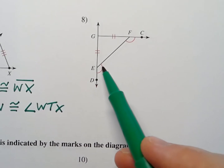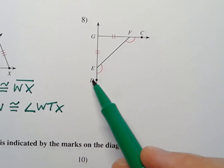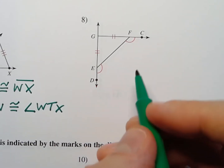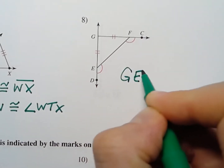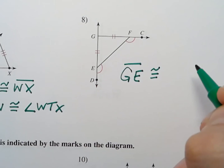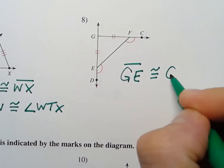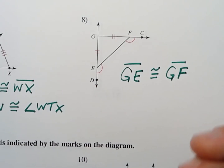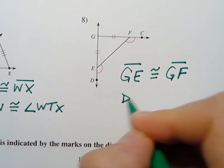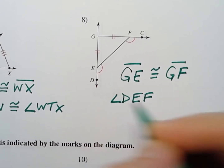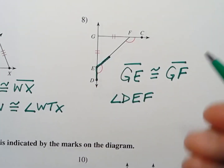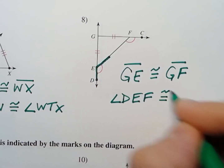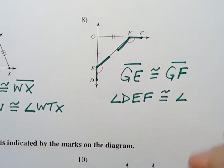Over here we have congruent marks on two obtuse angles and two congruent line segments, so we can say that line segment GE is congruent to GF. And we can say that angle DEF — notice I'm naming it DEF — is congruent to angle CFE.